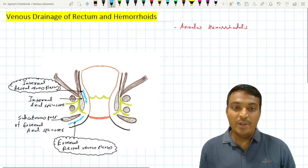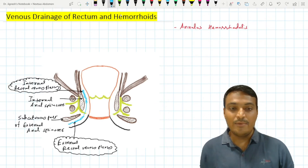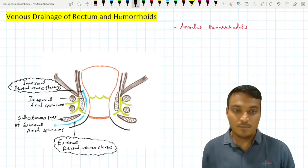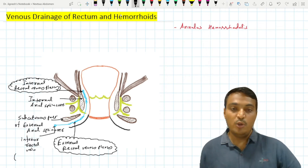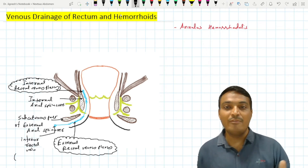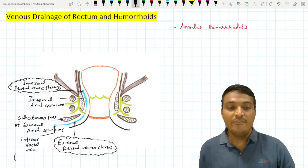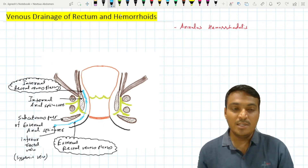Both these plexuses communicate with each other. The external rectal venous plexus drains into the inferior rectal vein. The inferior rectal vein is a systemic vein that drains into the internal iliac vein, and through the internal iliac vein, ultimately into the inferior vena cava.